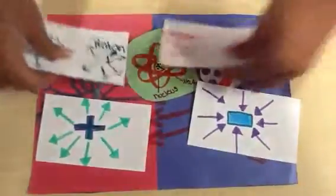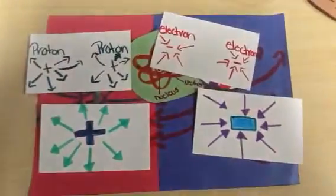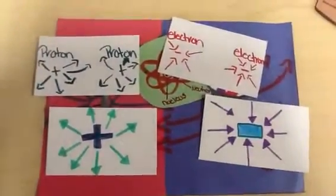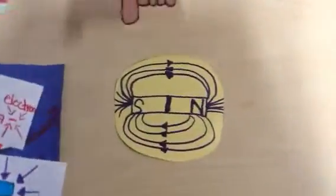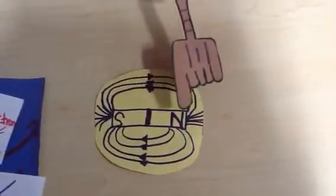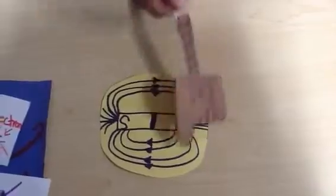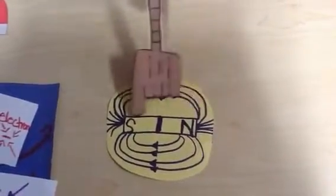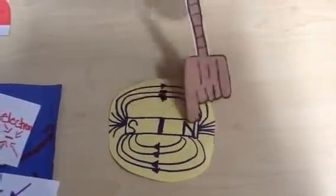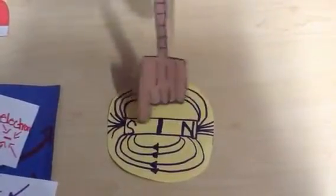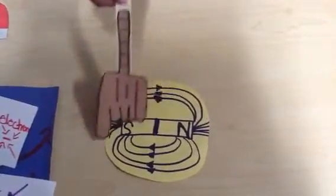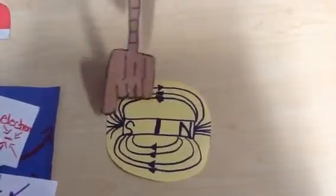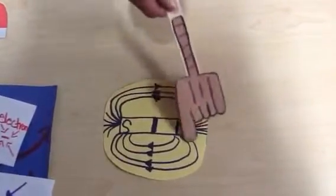Magnetism is a force created by objects that have a magnetic field, which causes the objects to attract or repel. Magnets have a field around them, and all magnets have poles. Magnetic poles are the points where the field lines begin and end, which means field lines come together at poles.